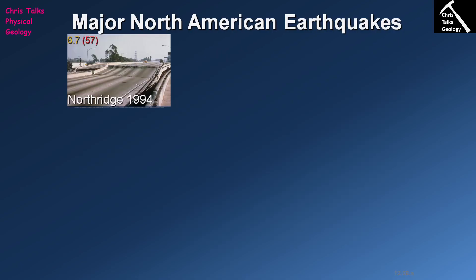What are some of the major earthquakes that have actually taken place in North America? For each picture, the number in orange is the Richter magnitude and the number in red is the death toll. In 1994 there was a magnitude 6.7 earthquake in Northridge, causing substantial damage — you can see a bridge that has quite clearly failed. Considering the size of the earthquake and the fact it occurred in a relatively built-up area, only 57 people died, which is probably the result of relatively rigorous building codes.